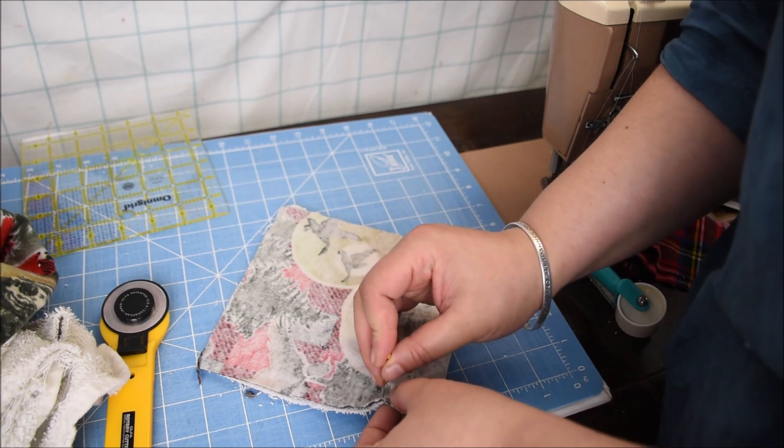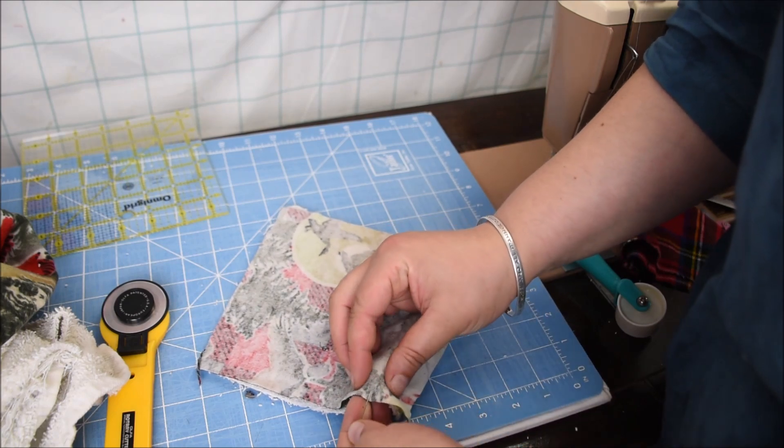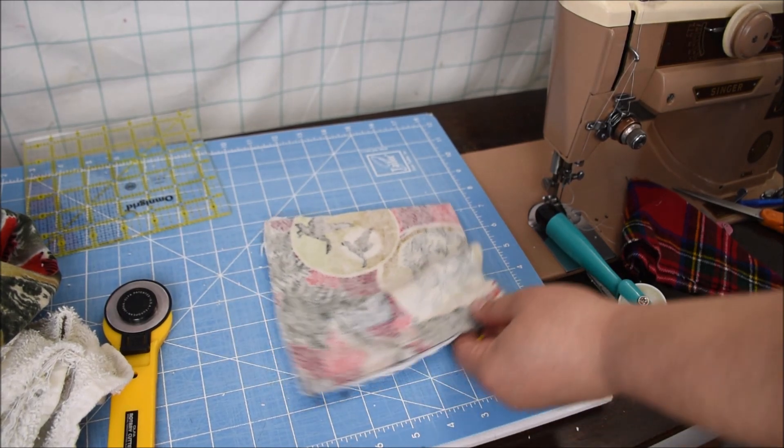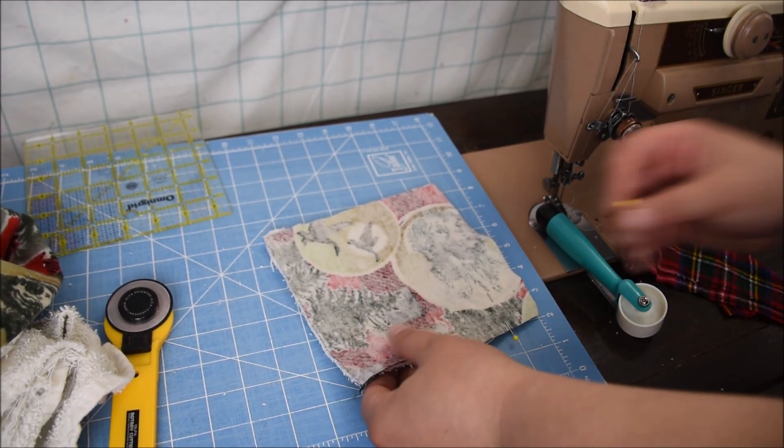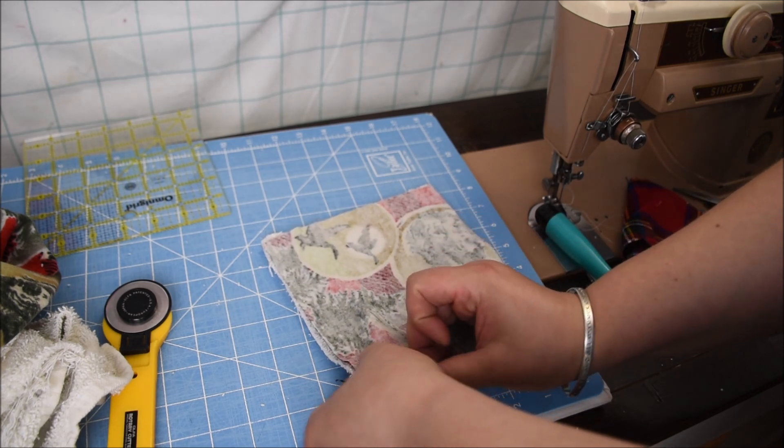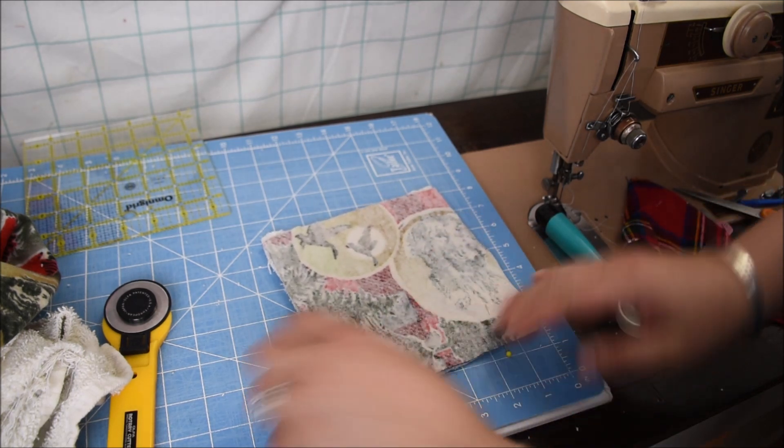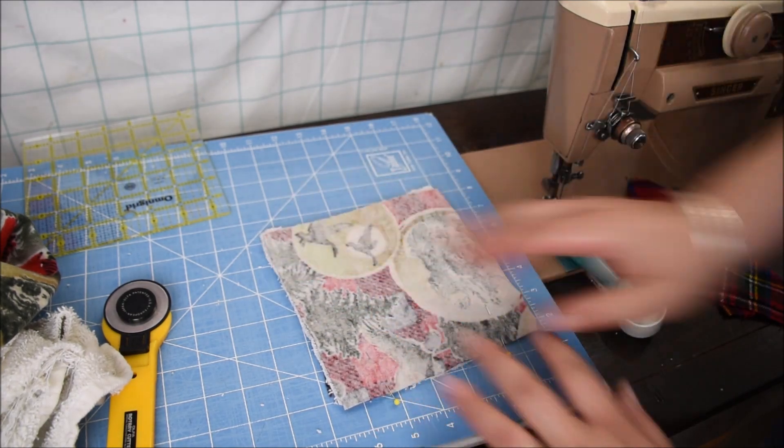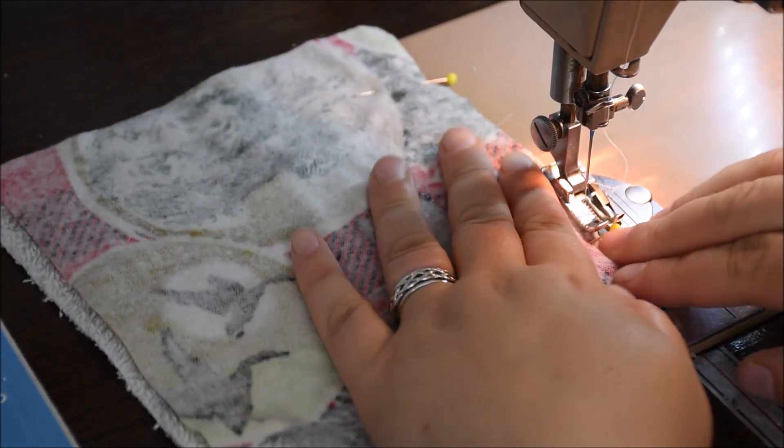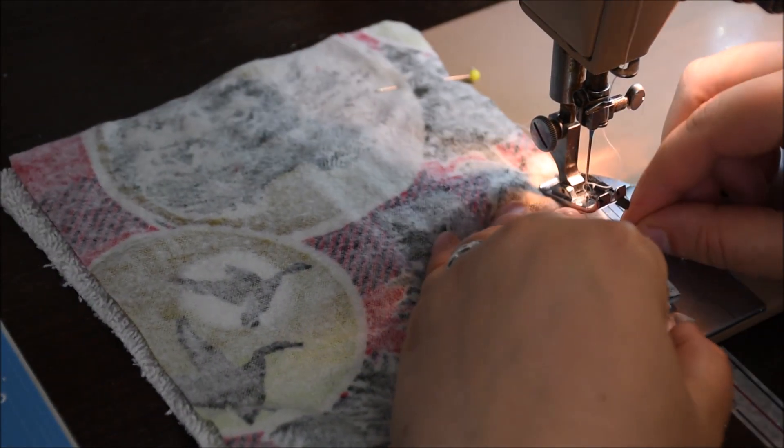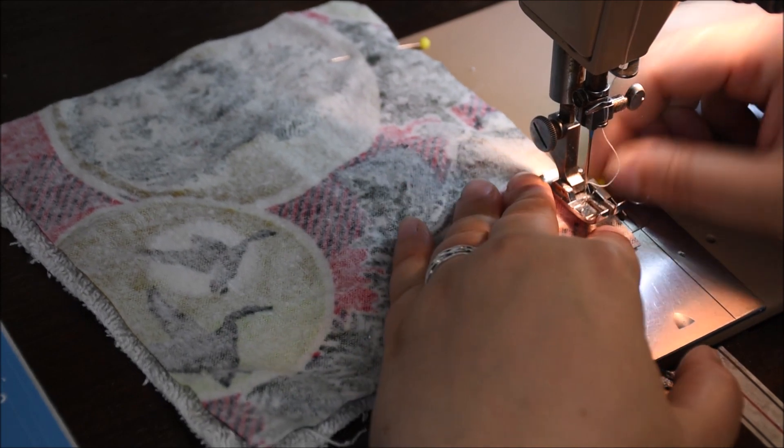Now I'm just putting some pins in to mark where to start and stop with my sewing because I need a gap where we're going to be turning this inside out, or right side out rather. But I think you'll see as I'm sewing this that the layers move, so having a few more pins would actually help stop those layers shifting as I'm sewing.